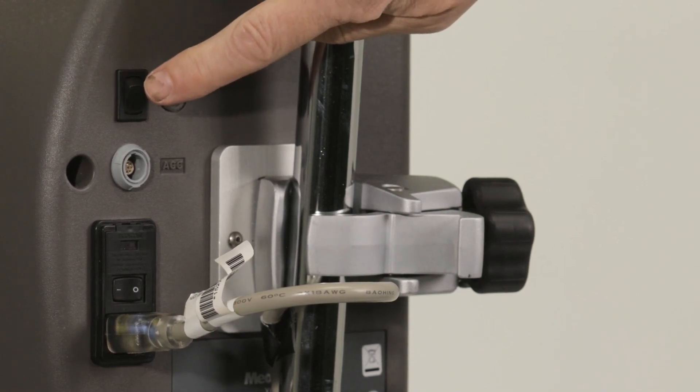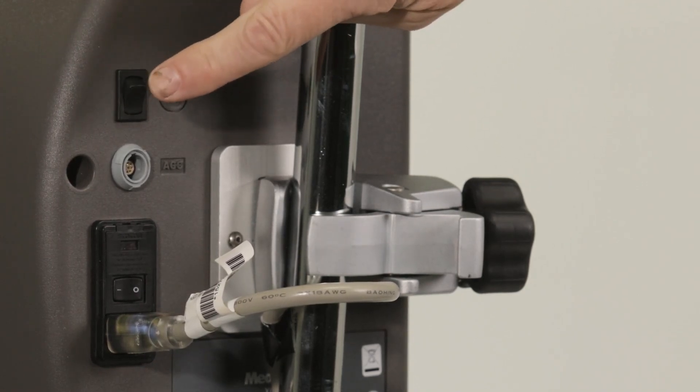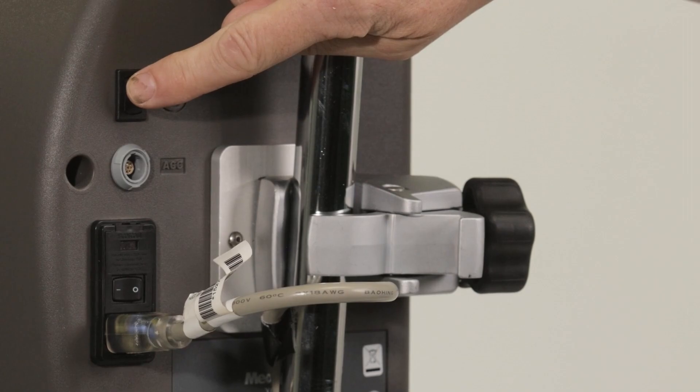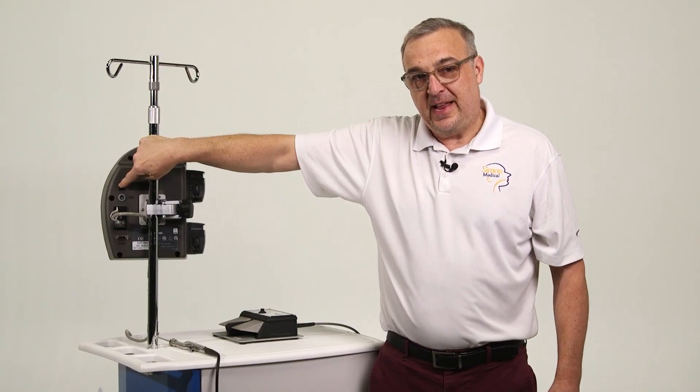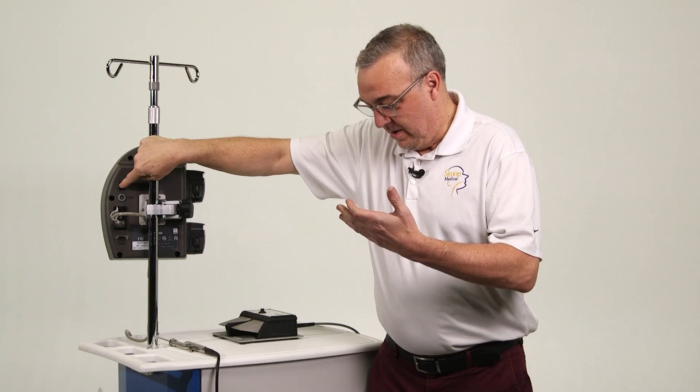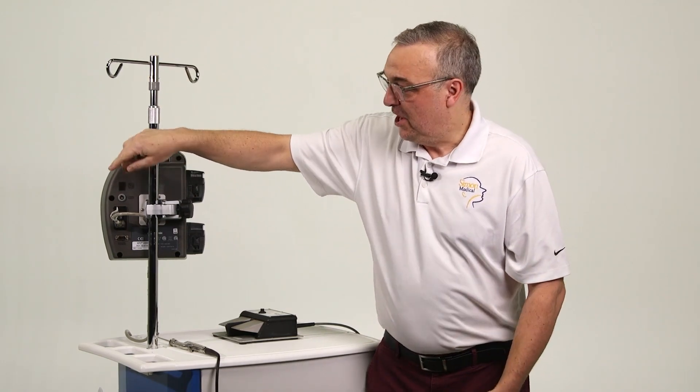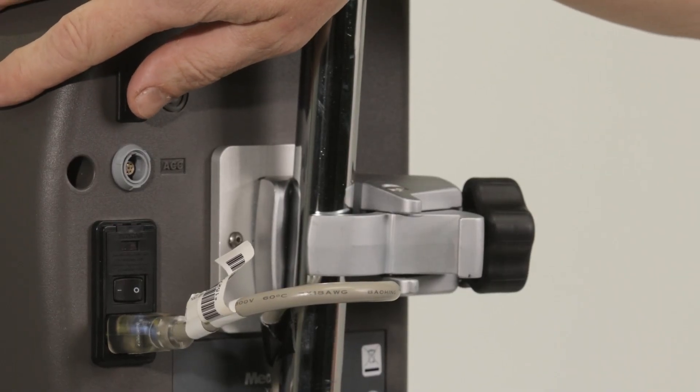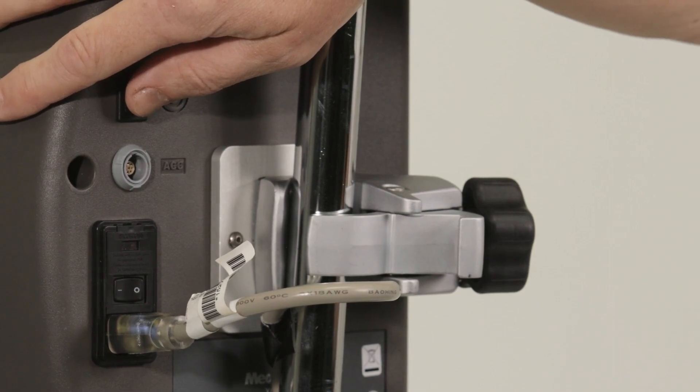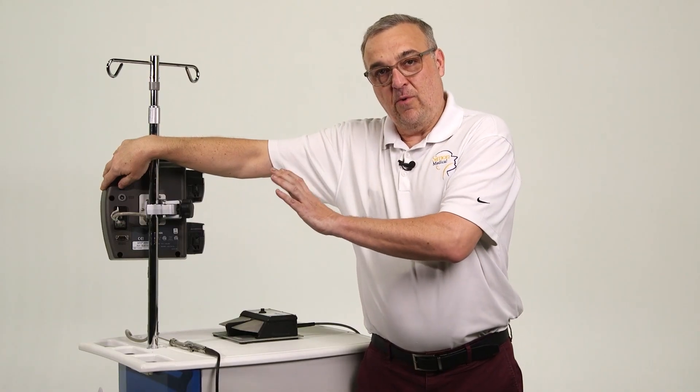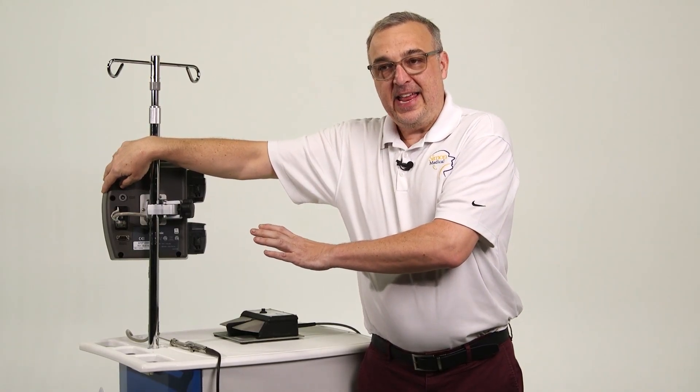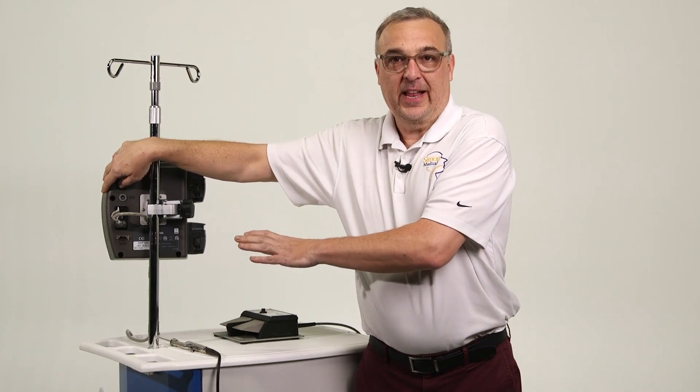This button up here, which is infrequently used, is actually an emergency backup for the foot pedal. If you're in a case and a foot pedal stops working or you don't have a foot pedal, you can manually control the microdebreeder or the Skeeter drill or the ENT hand pieces that you'll be utilizing with this.